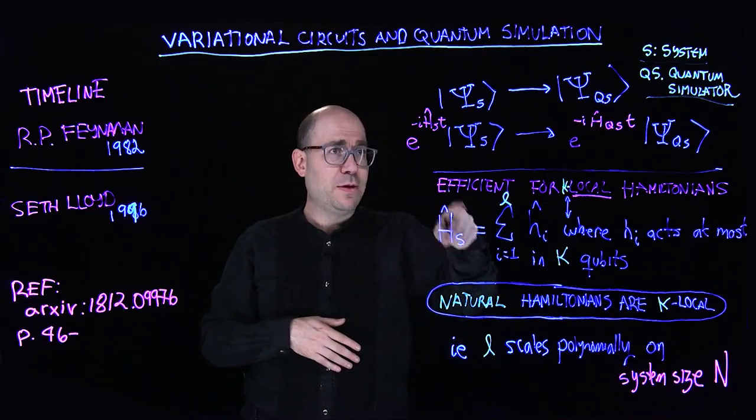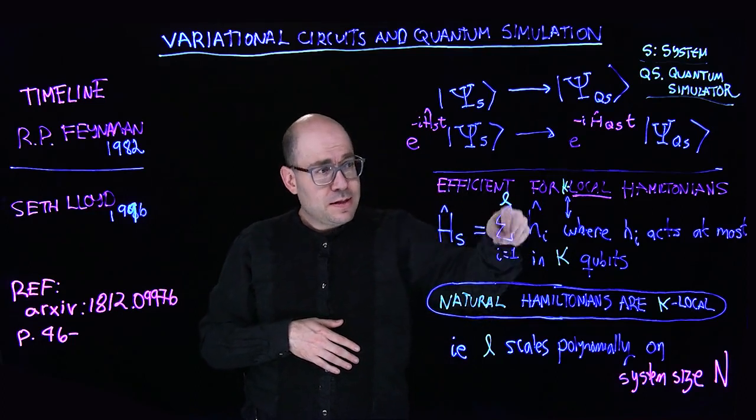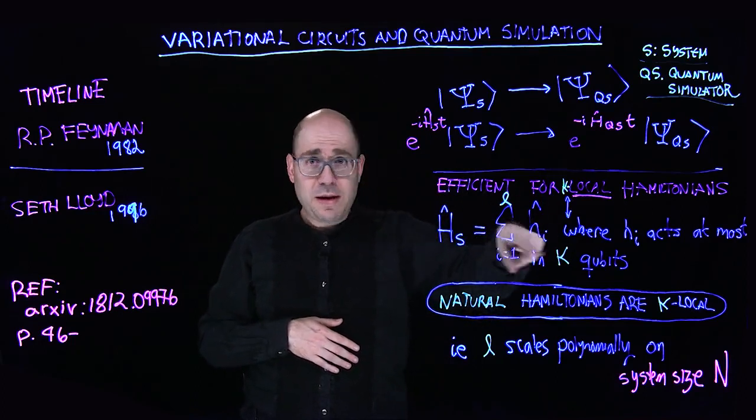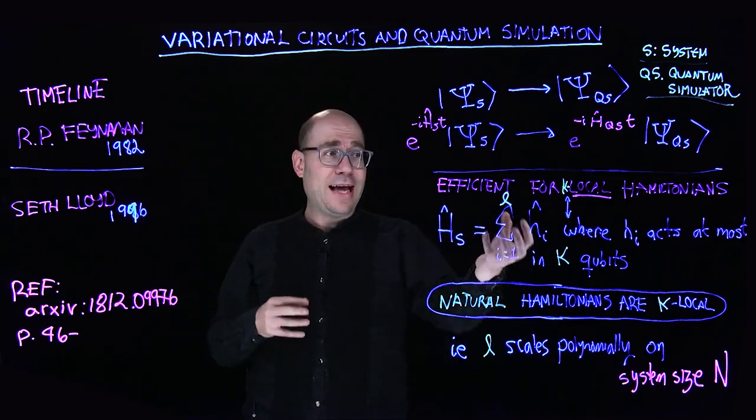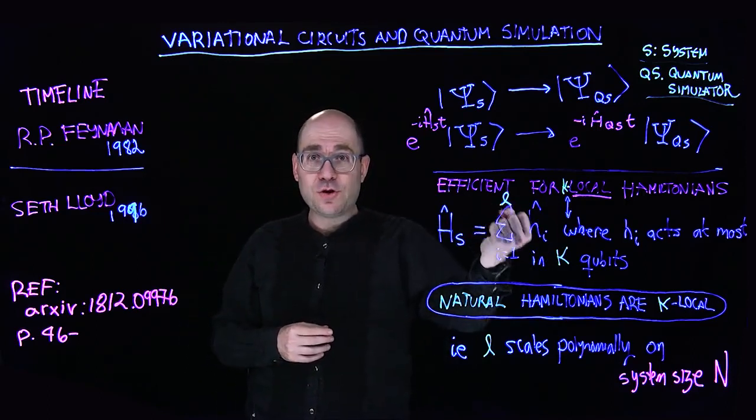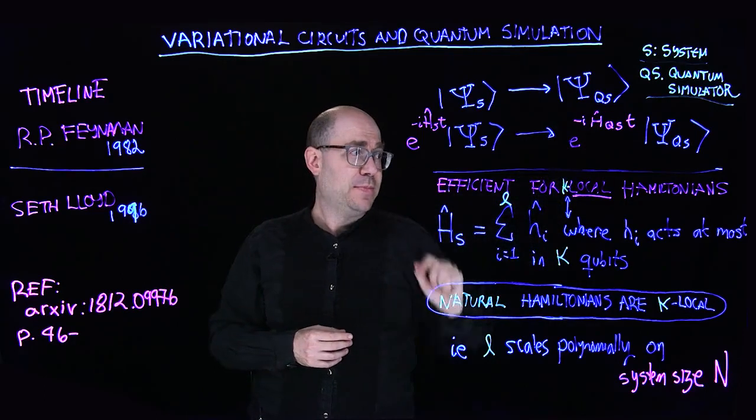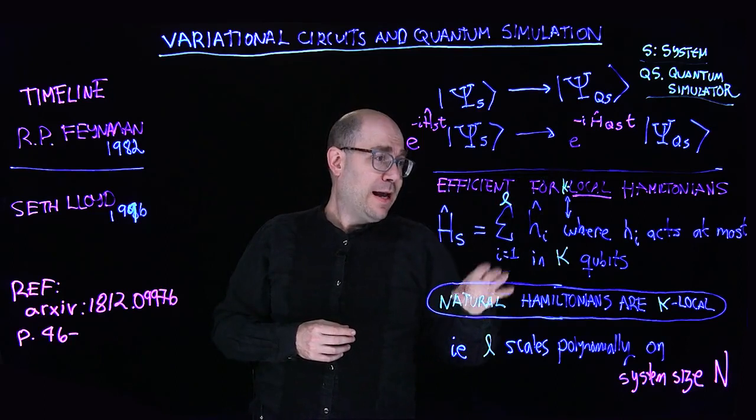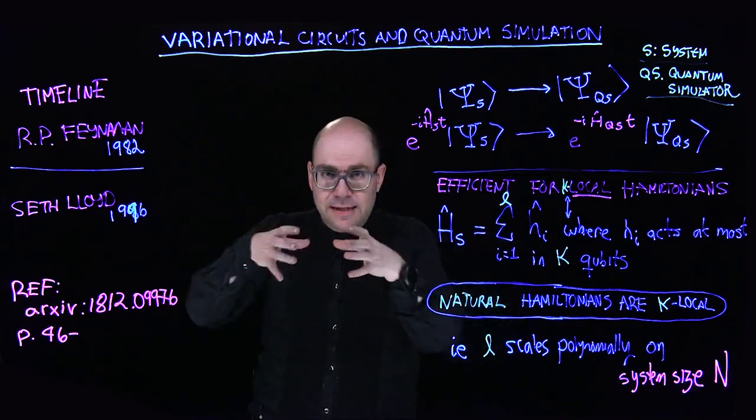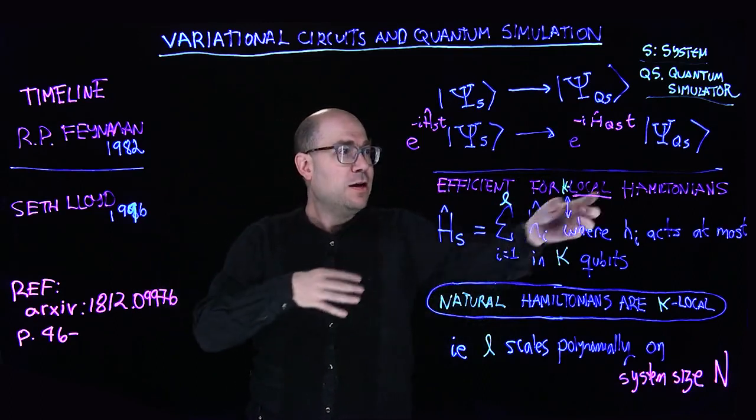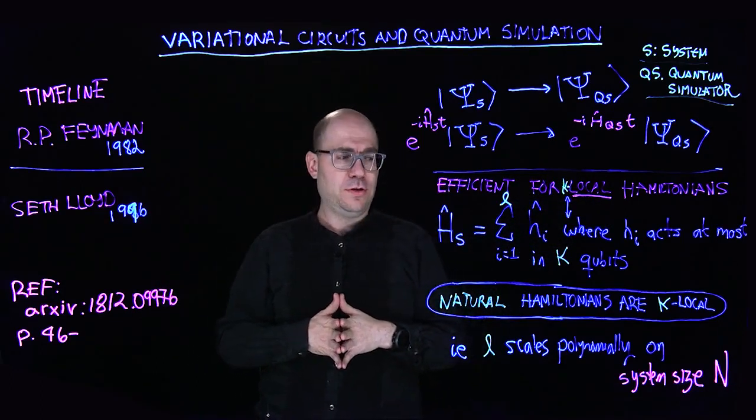This is the system Hamiltonian that we already discussed here that can be partitioned in different terms and just remember that Hamiltonians really are just energy functions. So this is just counting all the different contributions to the energy of the quantum system that in turn determine its dynamics. And again, all these terms have this rule that they can only act on at least a certain number of qubits given locality. Very important feature for being able to do simulation.